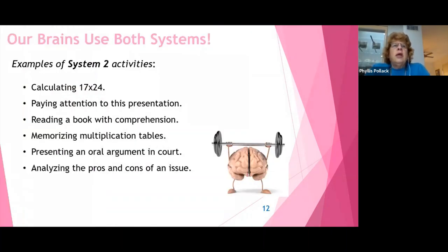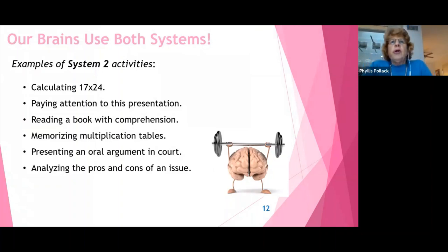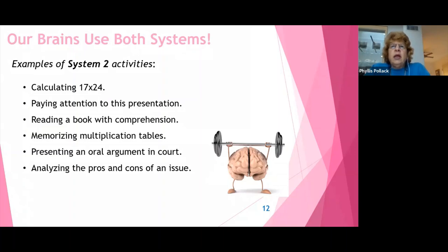System two thinking — I would like you to try this without a piece of paper or pencil: calculate 17 times 24 in your head, paying attention to this presentation, reading a book with comprehension, presenting an oral argument in court, or sitting and analyzing the pros and cons of an issue. For those of you who tried to multiply 17 times 24 in your head, the answer is 408.